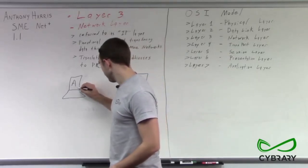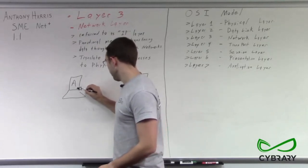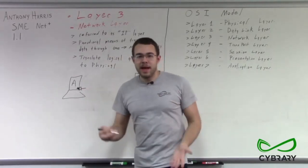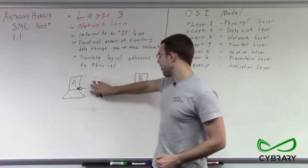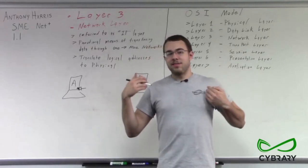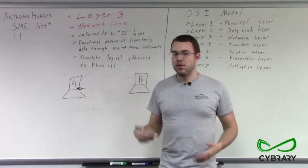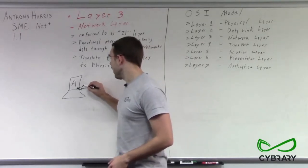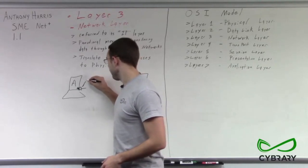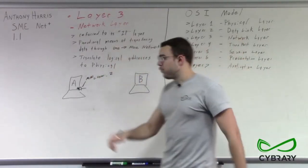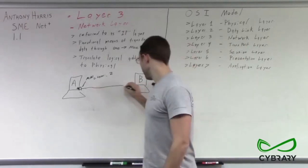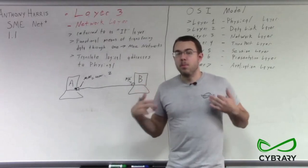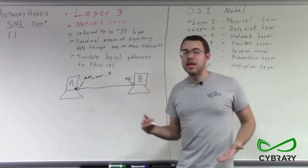We have our electrical impulses going from inside our computer to our network interface card to our cable. This network interface card has a unique address — the MAC address. That MAC address is a unique physical address assigned to that particular network interface card, and that MAC address is going to be layer 2. If we were sending this data packet directly to computer B — to its network interface card, directly to its MAC address — that would also be a layer 2 point, the data link layer, that unique point-to-point connection.